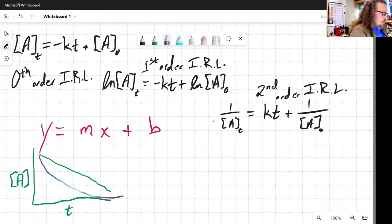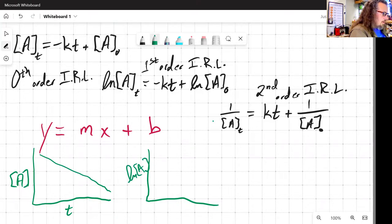So we can determine integrated rate laws, we can determine orders in some cases with this type of an experiment by plotting concentration versus time, natural log of concentration versus time.